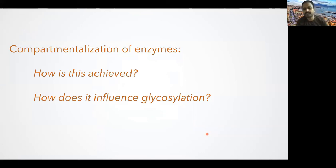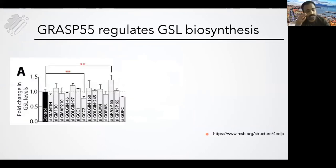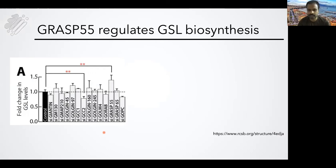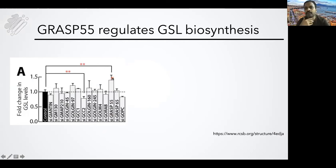To identify the molecular basis of this compartmentalization, we did a siRNA screen of several molecules which are localized to the Golgi and are known to be important in organizing the Golgi structure or compartmentalization. We knocked each one down and looked for changes in glycosphingolipid levels. What we found was that knocking down one protein called GRASP55 increased the production of GSLs, very similar to what happens if you destroy the organization of the Golgi. So we focused on this molecule, GRASP55.